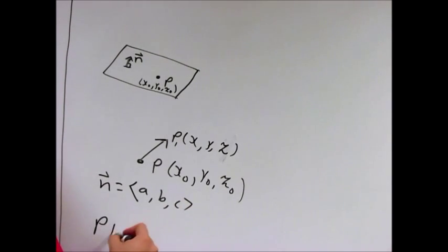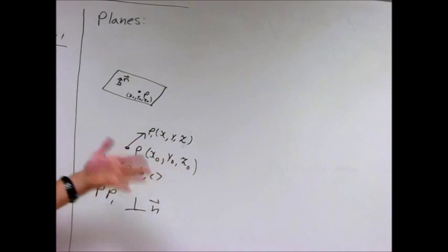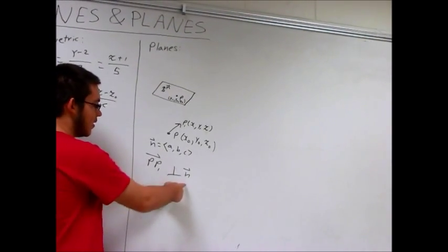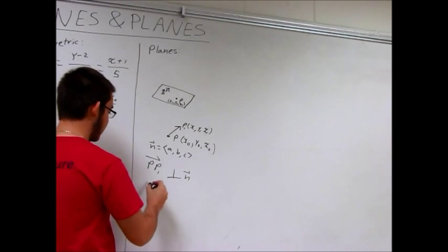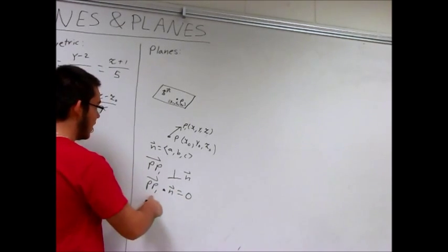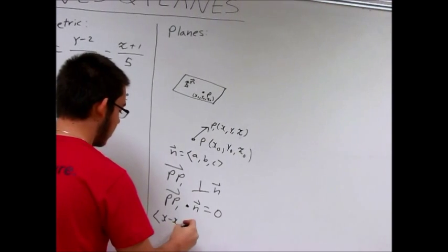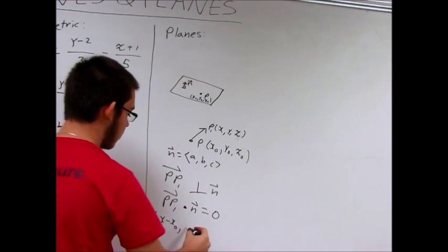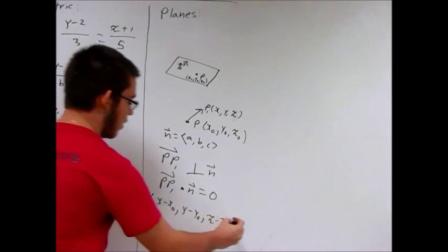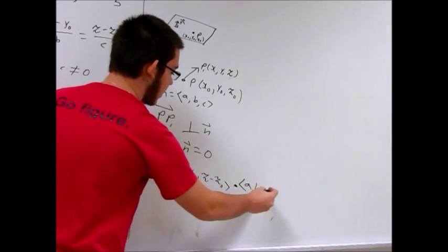Then the vector p, p1 is perpendicular to n, as long as p1 is a point on the plane. And so earlier, when we were talking about vectors, we said that two vectors are perpendicular, and the dot product is zero. So that means that p, p1, dot product of n equals zero. And p, p1, what we can see, this has to be, we go from x0 to x, that's just x minus x0. Same thing from y to y0 will be y minus y0 and z minus z0. And that's this, dot product, n, we say n is a, b, c. A, b, c equals zero.